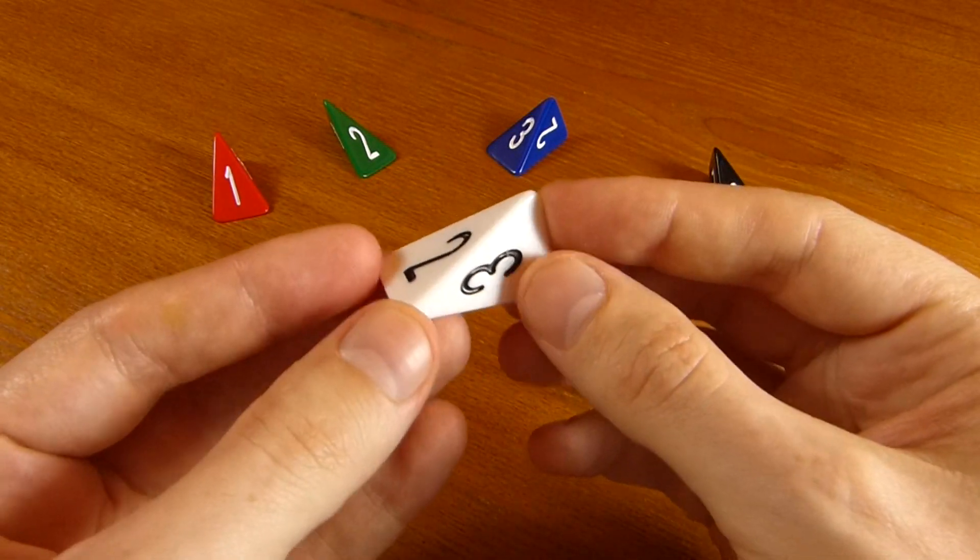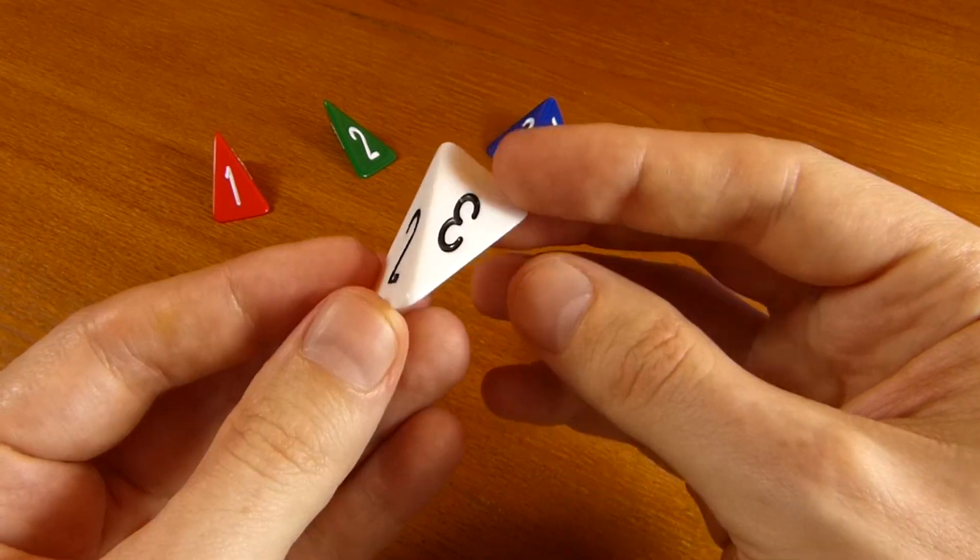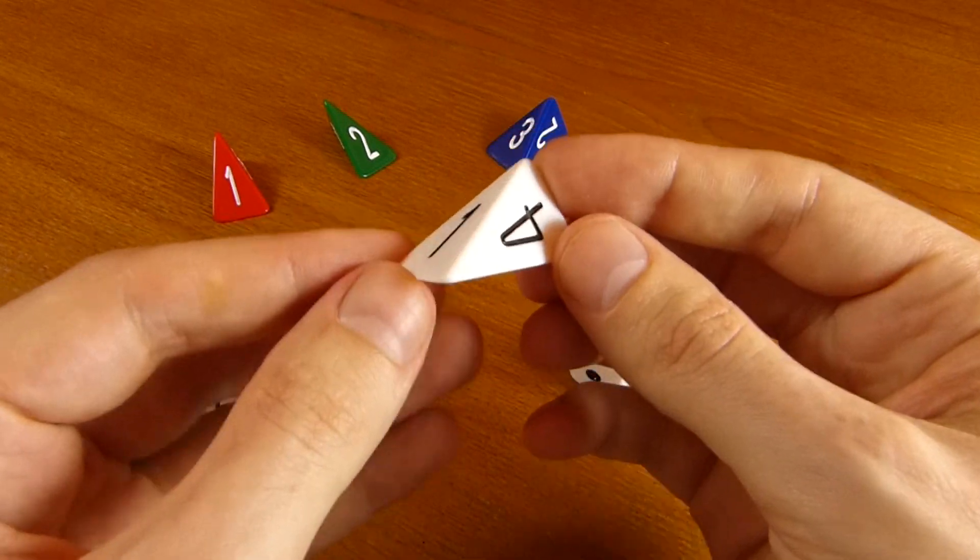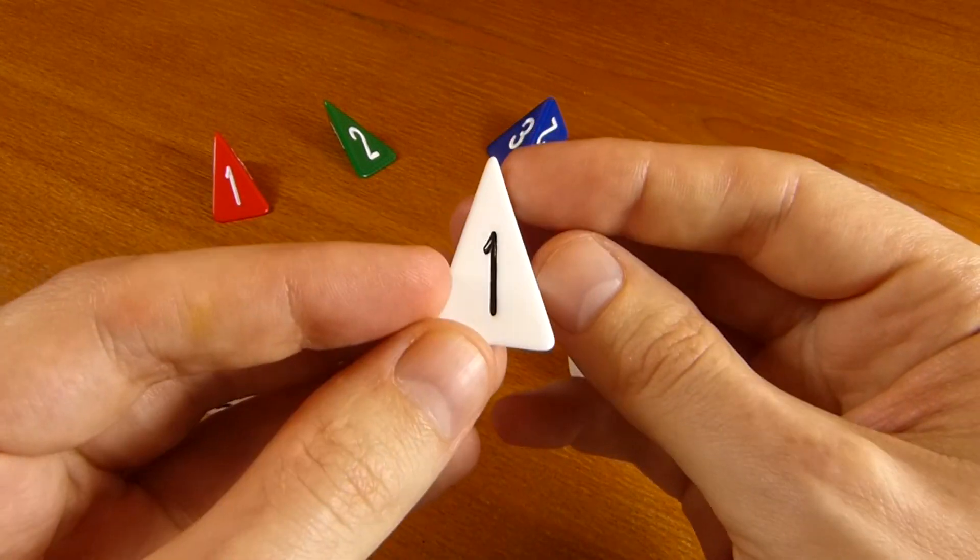What do you need for a die to be fair? You need that all the faces are the same and you need that the symmetries of the object will take any face to any other face.